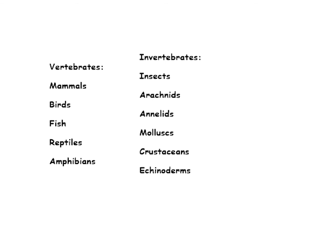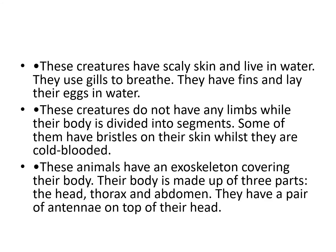We've had different ways of classifying vertebrates and invertebrates. We've had mammals, birds, fish, reptiles, amphibians, insects, arachnids, annelids, mollusks, crustaceans, and echinoderms. On the next slide I'm going to give you a couple of definitions and I'd like to see if you can work out which animal group I'm referring to. You've got three definitions — pause the video for a moment if you need to, and then on the next slide you'll have the answers.